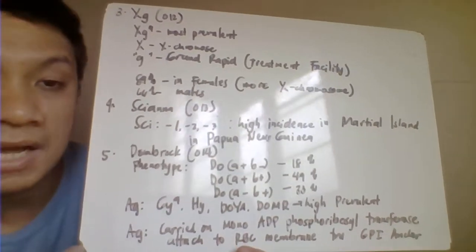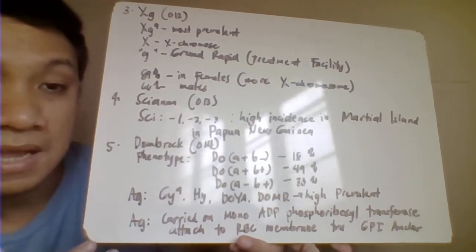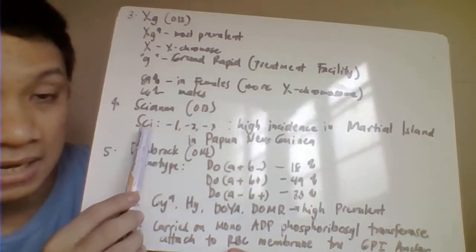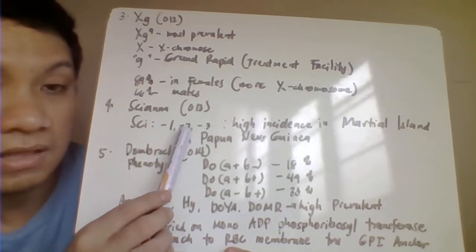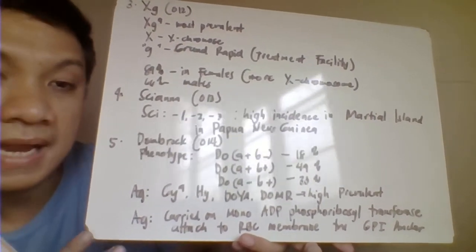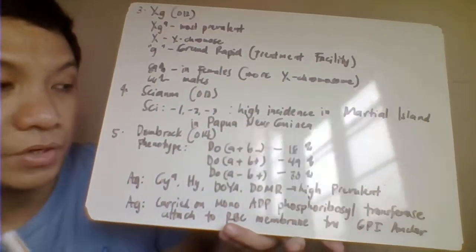Next, we have the Scianna blood group system, 013 ISBT classification number. We have the Scianna null phenotype, negative 1, negative 2, negative 3. It's very prevalent among the Marshall Islands inhabitants in Papua New Guinea.